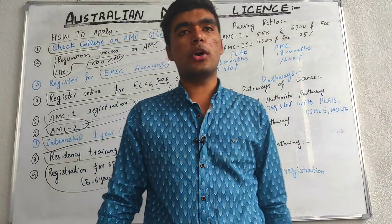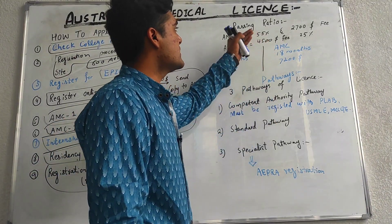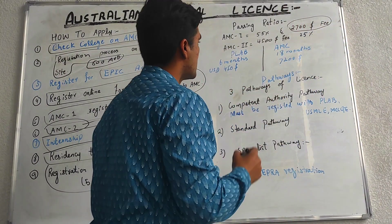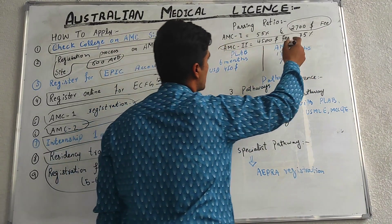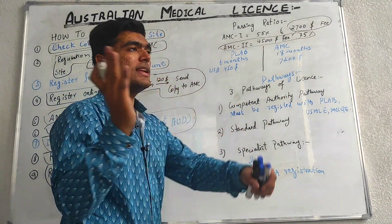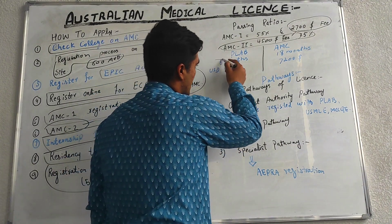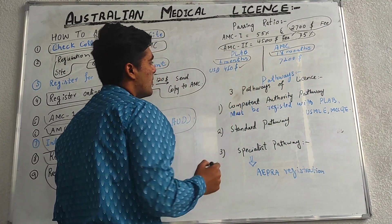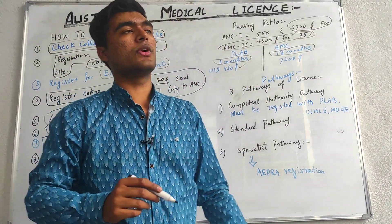The passing ratio for AMC Step 1 is 55% and the fee is 2,700 Australian dollars. AMC Step 2 has a passing ratio of 25 to 30% and a fee of 4,500 Australian dollars. By comparison, PLAP is a six-month process while AMC takes 18 months. The PLAP Step 1 fee is 450 US dollars versus 2,700 Australian dollars for AMC.